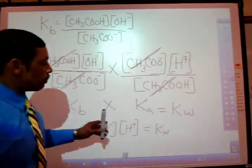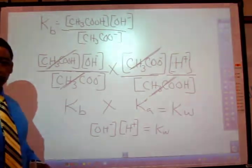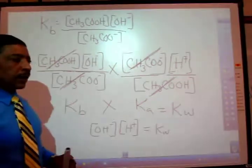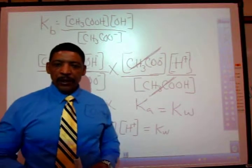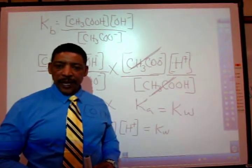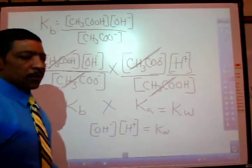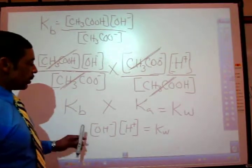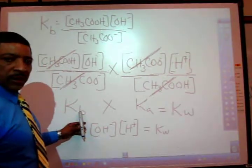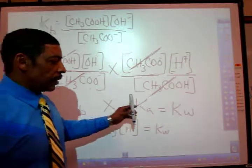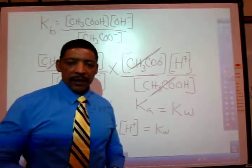Therefore, if you're given the Kb of a conjugate base, you may find the Ka value of the conjugate acid simply by plugging your Kb value into this expression and solving using our Kw.